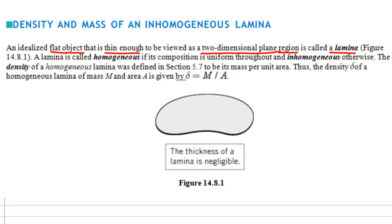A lamina is called homogeneous if its composition is uniform throughout, and inhomogeneous otherwise. The density of a homogeneous lamina is defined as mass per unit area. So if delta is the density, m is the mass, and a is the area, then delta equals m over a, or m equals delta times a, where a is the area of the region and delta is the density.